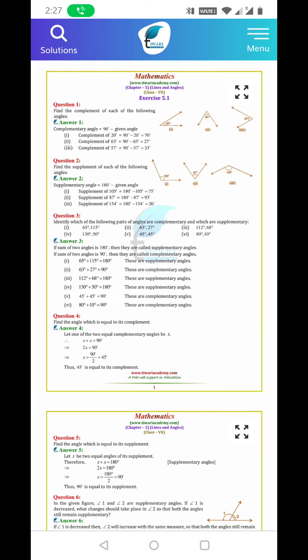Complement of 63: 90 minus 63 is equal to 27. Complement of 57: 90 degree minus 57 degree is equal to 33 degree.